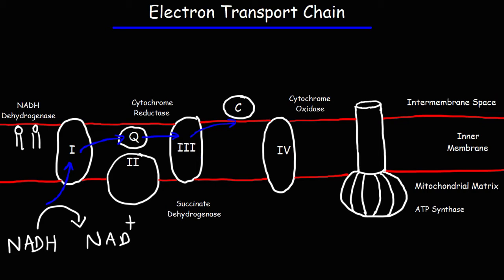Cytochrome c is another mobile electron carrier. It's free to move, but it's a surface protein as opposed to an integral protein. Complexes one and three are transmembrane proteins — integral proteins because they're completely embedded within the membrane. Cytochrome c is going to give up the electrons to complex four, also known as cytochrome oxidase. This transmembrane protein oxidizes cytochrome c because it takes away electrons from it. Anytime there is a loss of electrons, oxidation occurs.